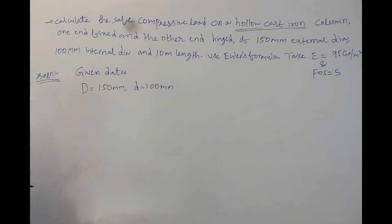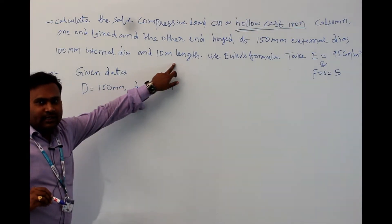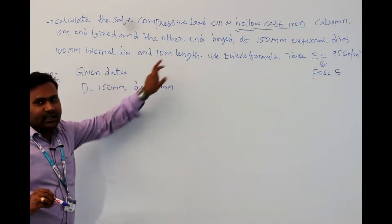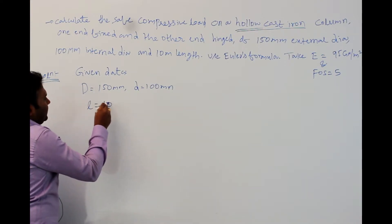The length of the column is also given in the question. Here it is not yet mentioned whether it is actual length or effective length. Therefore, whenever nothing is mentioned, we need to take it as actual length. So, actual length is 10 meters.